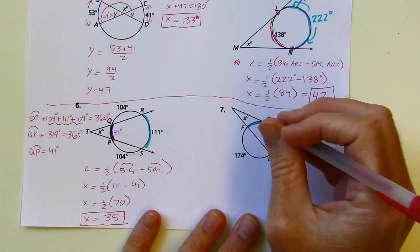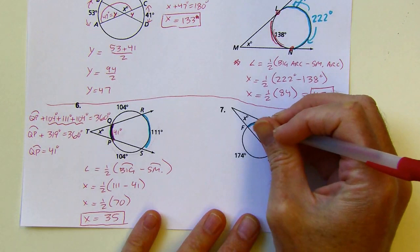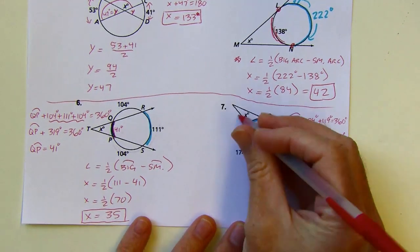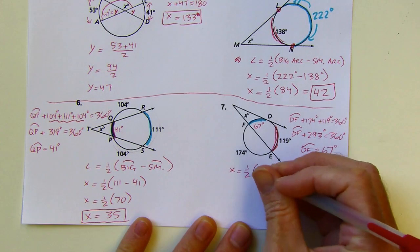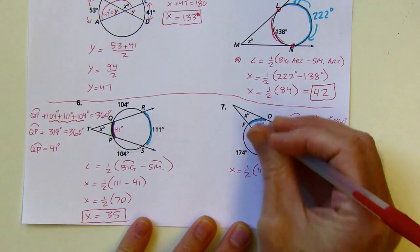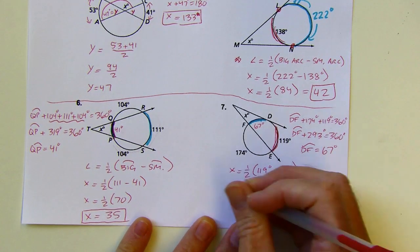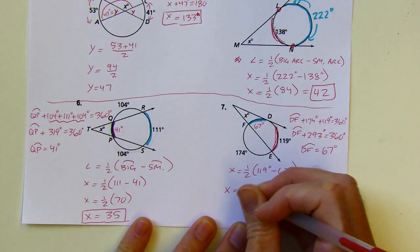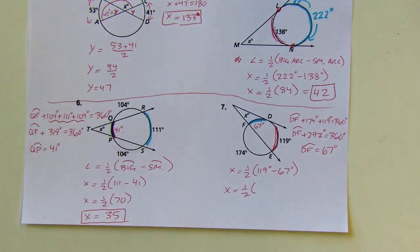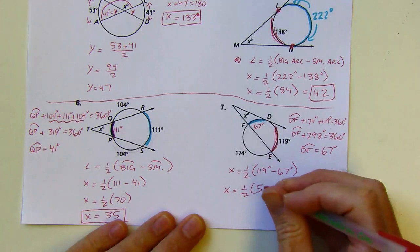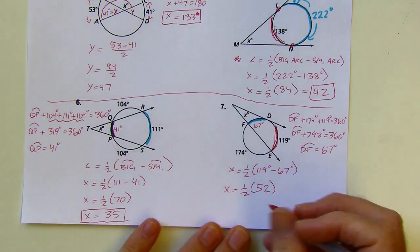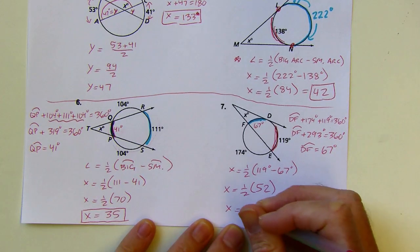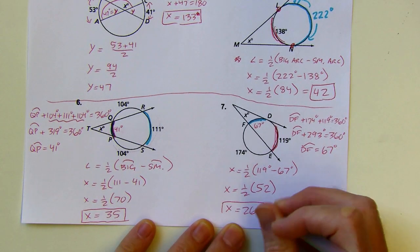That was this piece right here, 67 degrees. Now I can do my angle, which is X, is going to equal one half of the big arc, the big intercepted arc, minus the small one. I'll do the subtraction first, 52 degrees, and half of 52 is going to be 26. That is the end of the practice.